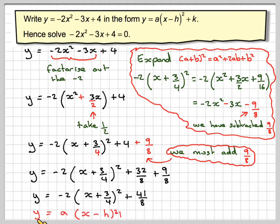So it's now in the correct format. y equals a brackets x minus h squared plus k. A is minus 2. h is minus 3 over 4. Because it says minus h is the correct format. And k is 41 over 8. So the vertex is given by h, k. So h is minus 3 over 4.